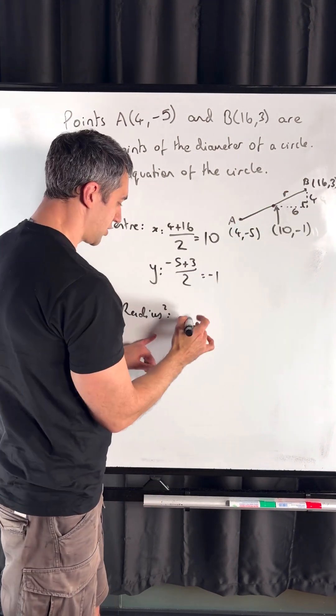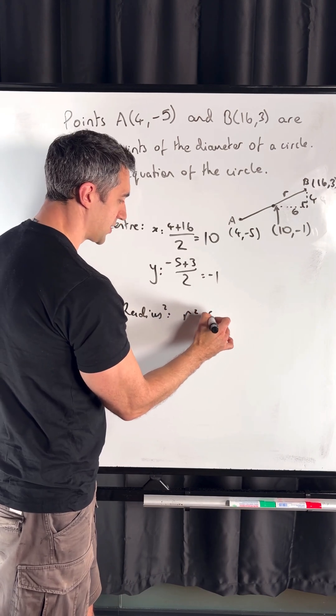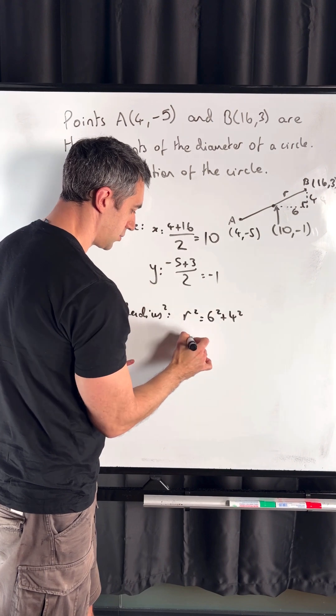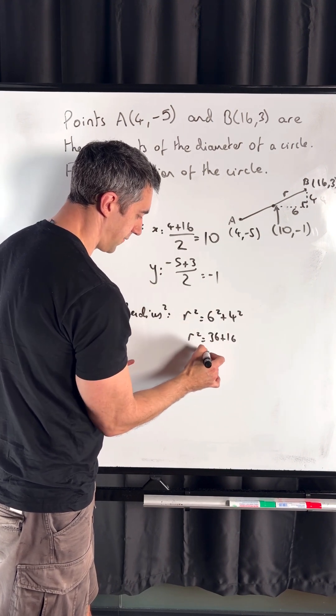Applying Pythagoras to our triangle: r² = 6² + 4² = 36 + 16 = 52.